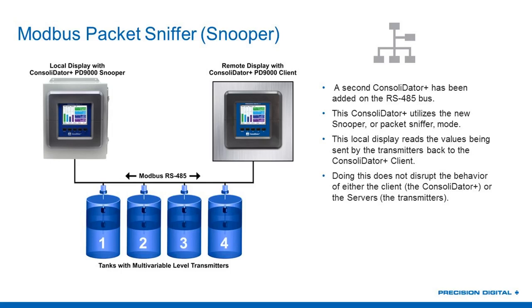Jose asks: can the display convert level to volume or mass by using a strapping table? The answer is yes — absolutely. You can do that on a 4-to-20 milliamp signal or on a Modbus input. Instead of two-point scaling, you'd use multi-point scaling and build the table right in there. That's very commonly used for people using a 4-to-20 level transmitter to show volume in a non-linear tank. With a Modbus device, you bring in the input already in feet and then scale those feet values right into volume or mass using the multi-point table.